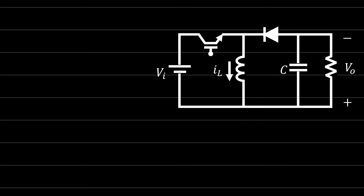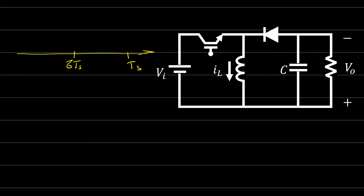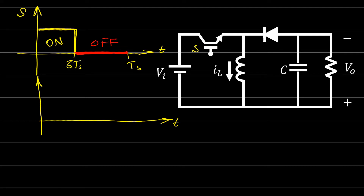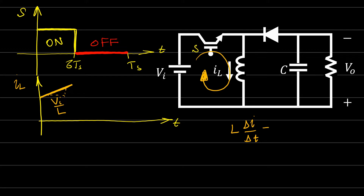Let's suppose the switch is on during the time from zero to δ·Ts, and off from δ·Ts to Ts. When the switch is on, the current flows through the inductor and the inductor current increases. The slope of this current is V_in / L, because the voltage across the inductor equals V_in, and dI/dt = V_in / L.